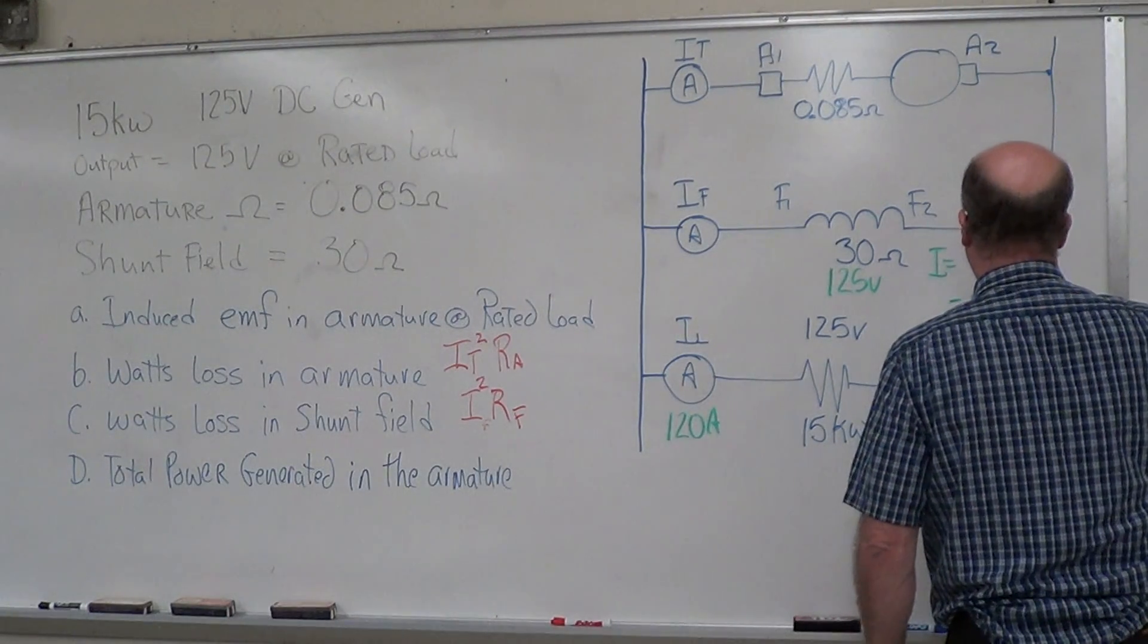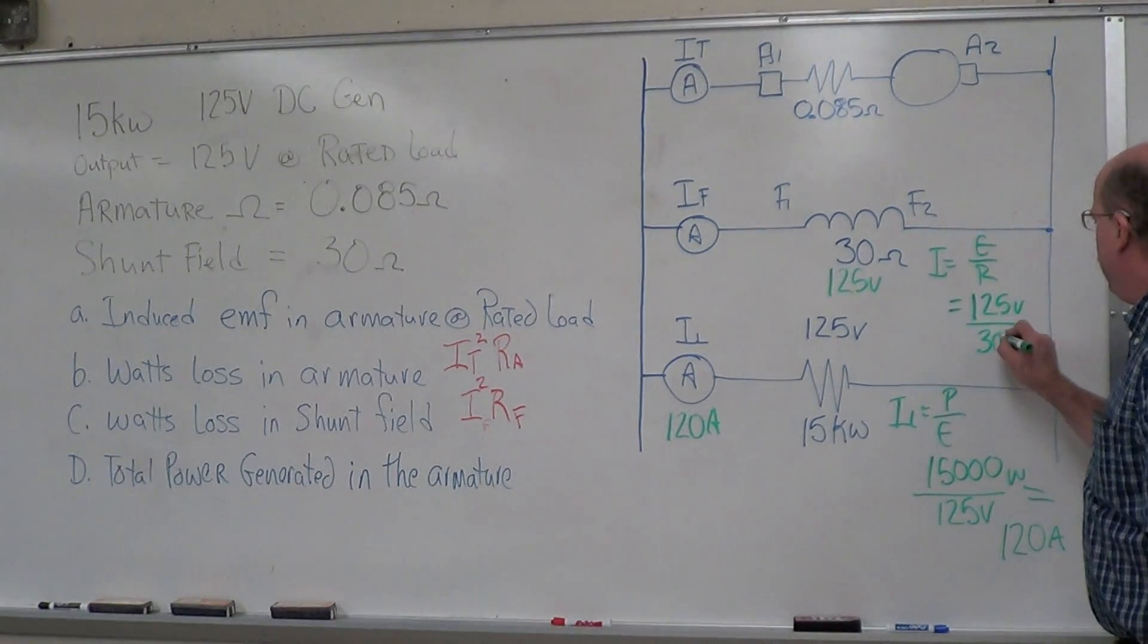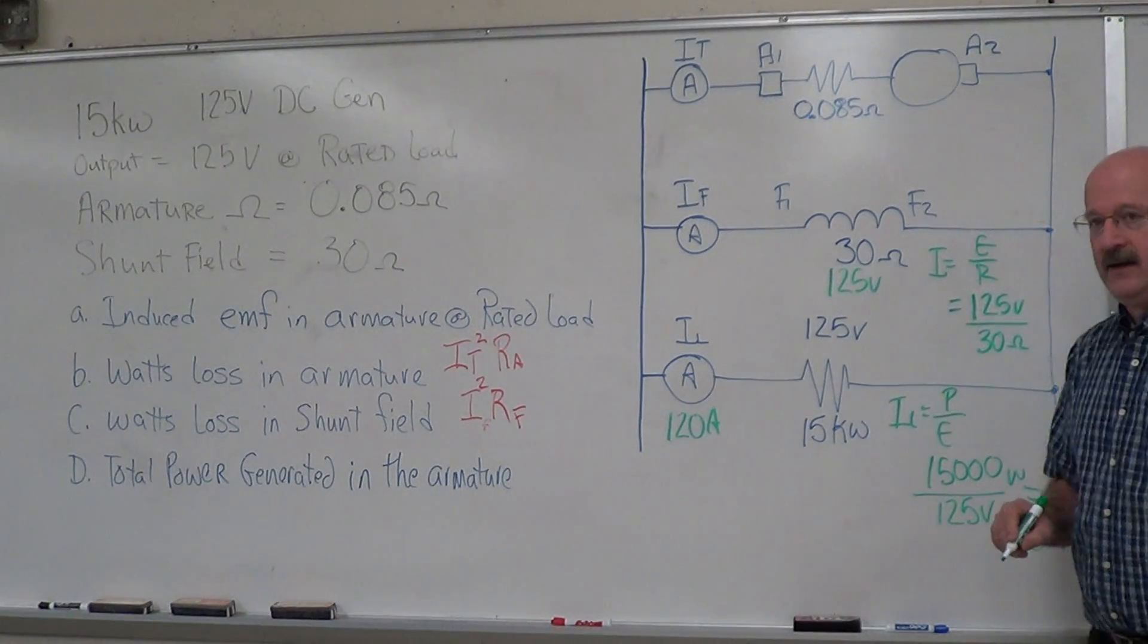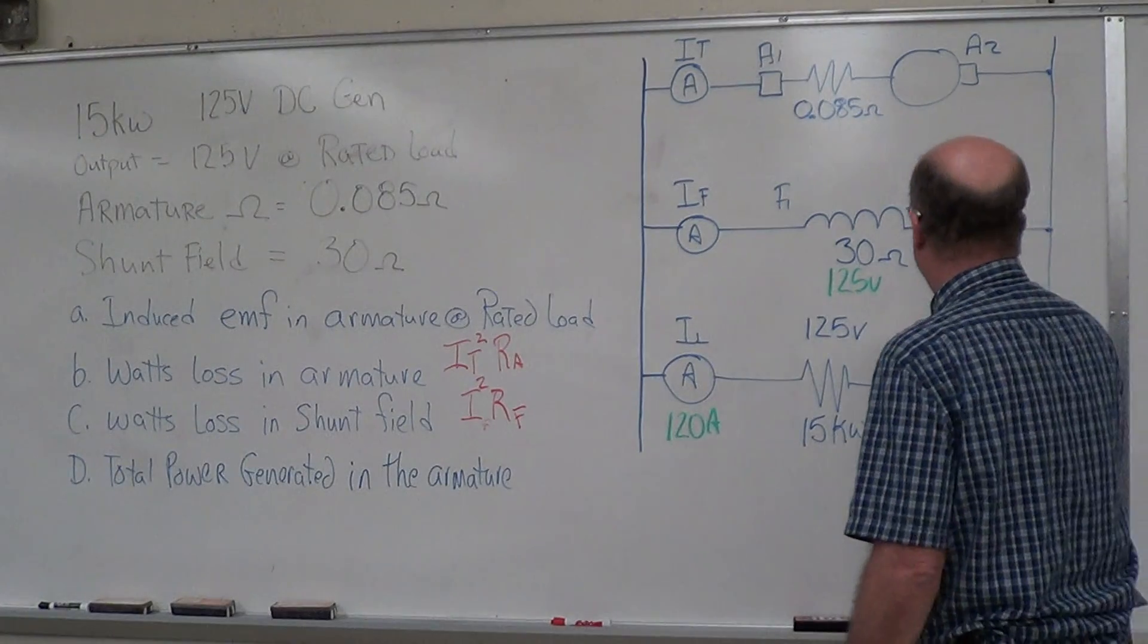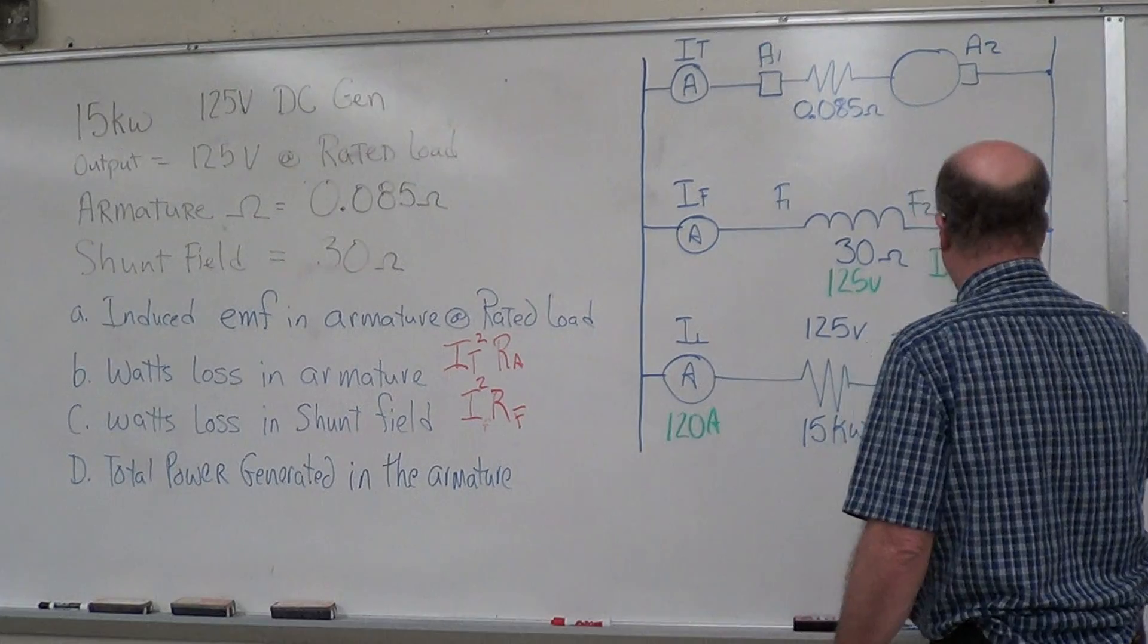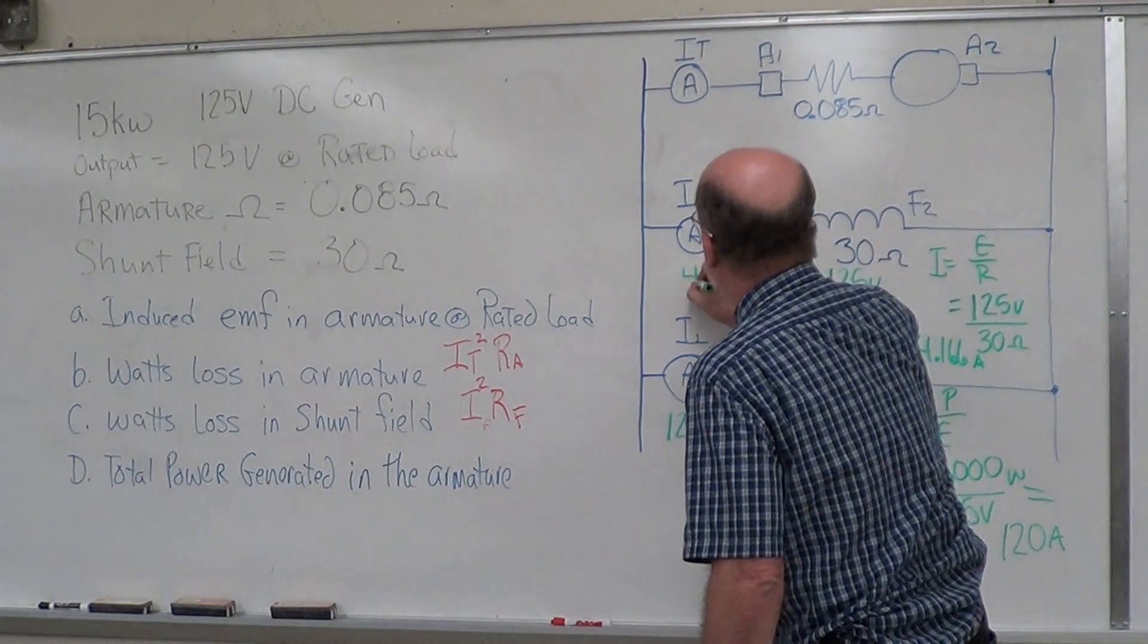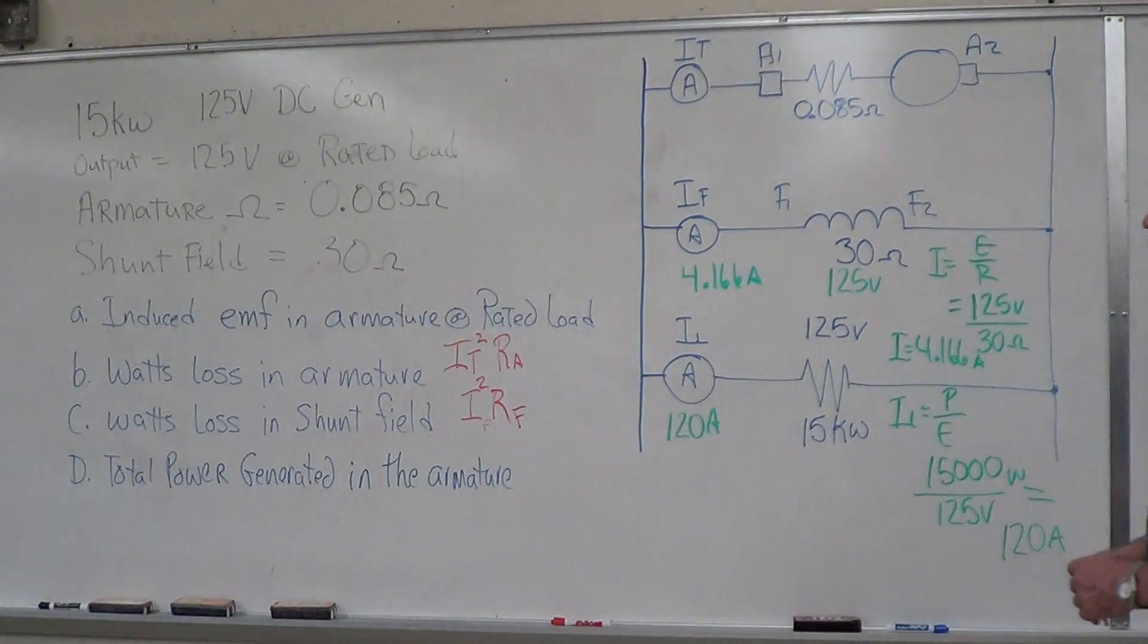125 divided by 30 ohms. What's our IF? 4.166 amps.